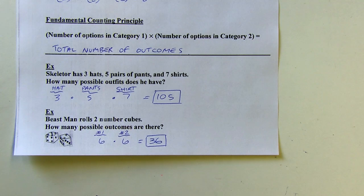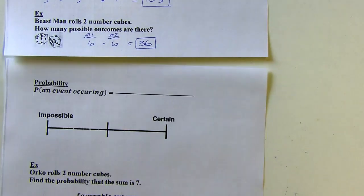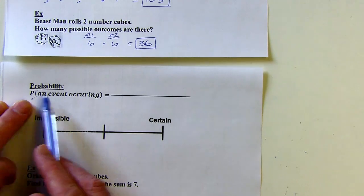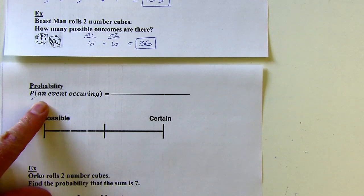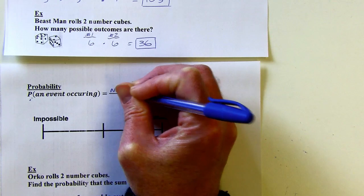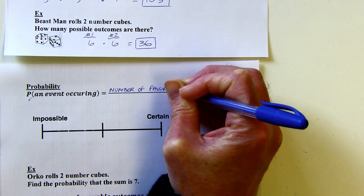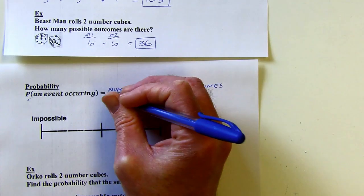That brings us to probability. The basic probability formula: you'll often see P and then something in parentheses — like P(49ers win the Super Bowl). You're finding the probability of that event. The way this works: you take the number of favorable outcomes as the numerator of your fraction, and divide by the number of total outcomes as the denominator.